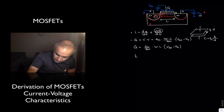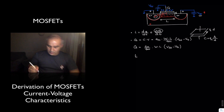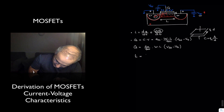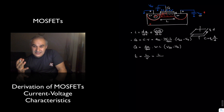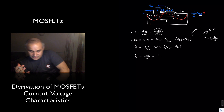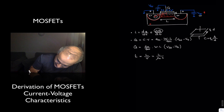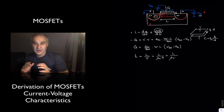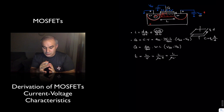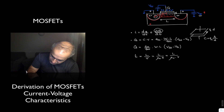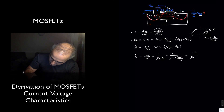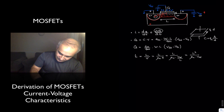What about the time it takes for an electron to cross to the other side? That is the length of the channel divided by the velocity of the carrier. The velocity of free electrons is μn times the electric field. The electric field is VDS divided by L, so the transit time is L² divided by (μn · VDS).